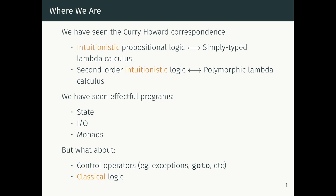When I introduced effects, I suggested that every kind of effect we commonly see is either a kind of state effect or a control effect. By control effects, I mean things like go-tos, exceptions, and threads. We haven't seen any of those yet — we printed some values, rewrote to some references, did loads and stores in memory — but we haven't done any unusual control flow. In this lecture, we're going to see that control operators do have a natural logical interpretation, and they cash out as a computational interpretation of classical logic.